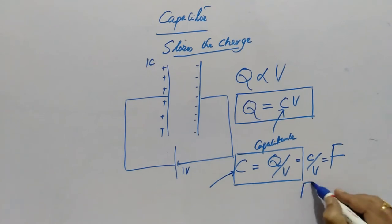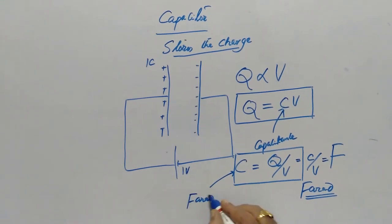F – Farad, the name of the great physicist Michael Faraday. Don't be confused, there is another unit called Faraday. So Faraday is the unit of charge which is approximately equal to 96500 coulombs. That you must have studied in your chemistry.